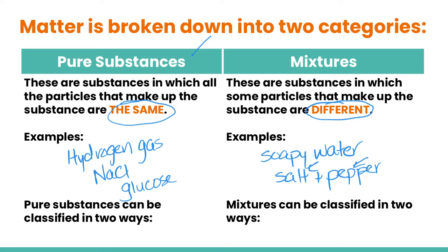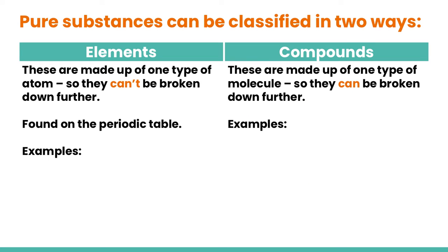Let's look at breaking down these two categories a little more, starting with pure substances. Pure substances can be classified in two ways: as either elements or as compounds. Elements are made up of one type of atom, so they can't be broken down any further. Your clue to know that something is an element is whether it can be found on the periodic table — if yes, it's an element; if no, it's probably a compound.